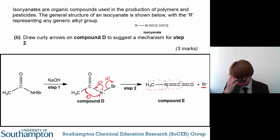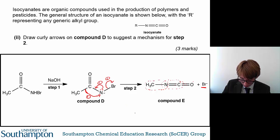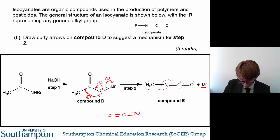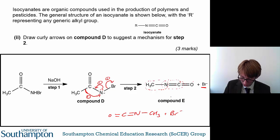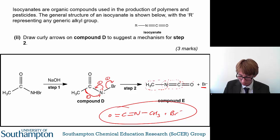And there you have it — that is your final product, and there are your three marks: one there, one there, and one there. You can check to make sure this is correct: you've formed a bond from the nitrogen to the carbon, giving a double bond; you have a double bond to the oxygen; this bond is now broken and it's on the nitrogen; and you've lost bromide ions. You can see that maps perfectly onto the product, though drawn the opposite way around.